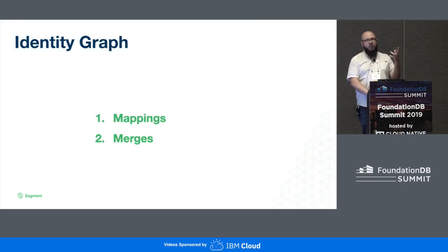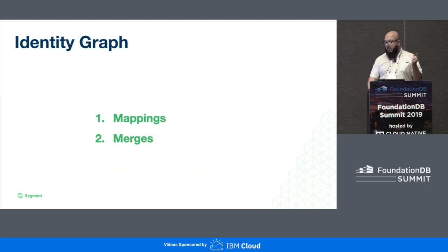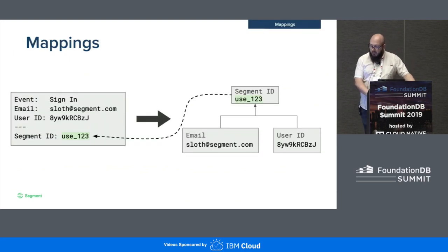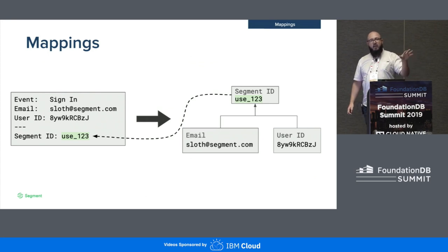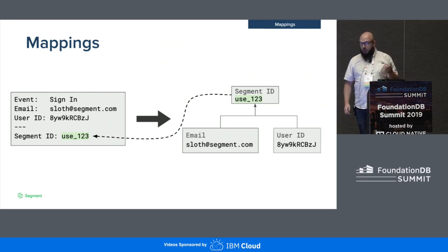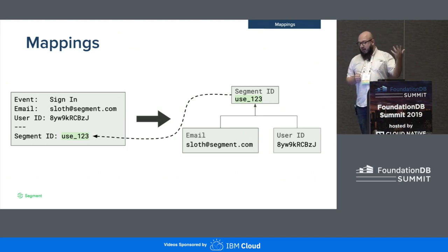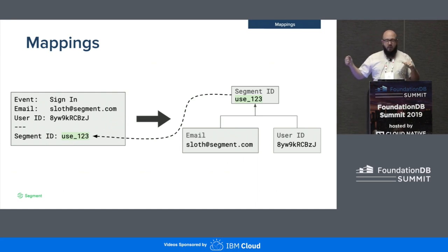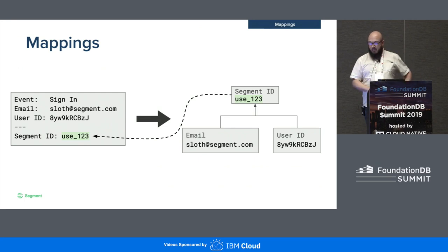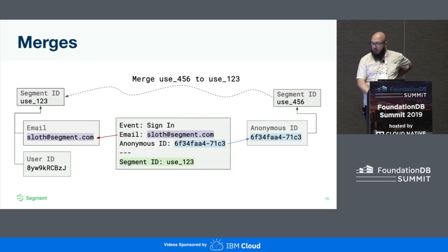The goal is to basically provide a unique ID that connects all those other identifiers together. We do this using two different types of data: mappings and merges. A mapping is what we do to connect an external ID — like an email address or a database ID — to what we call a segment ID, that universal ID. In this example, external IDs would be a user ID like 8Y, the email sloth@segment.com, and we're trying to map those all to the universal ID use123.